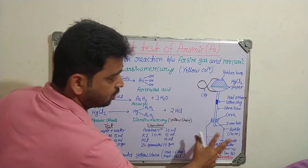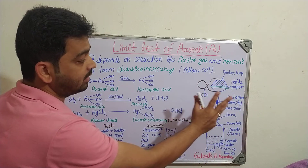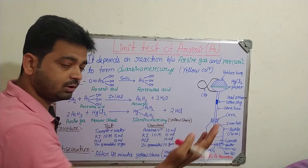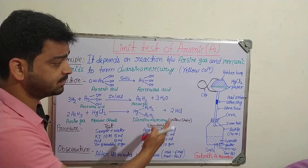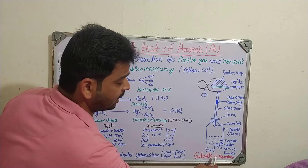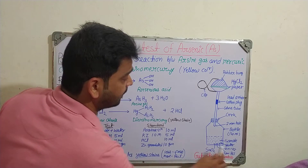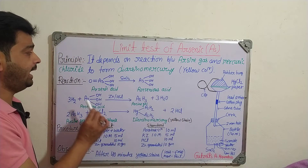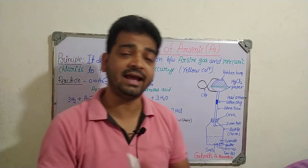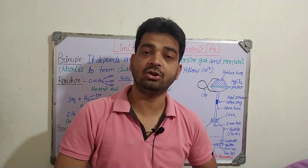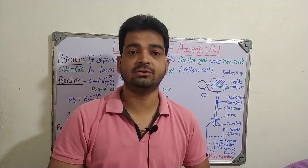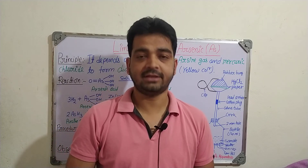This apparatus you should not forget. Many students draw only the Nessler cylinder, but we are going to use the Gutzeit arsenic apparatus — that is important here. We need to remember that arsine gas is reacting with mercury chloride and is forming the yellow stain. That's very important. Thank you.